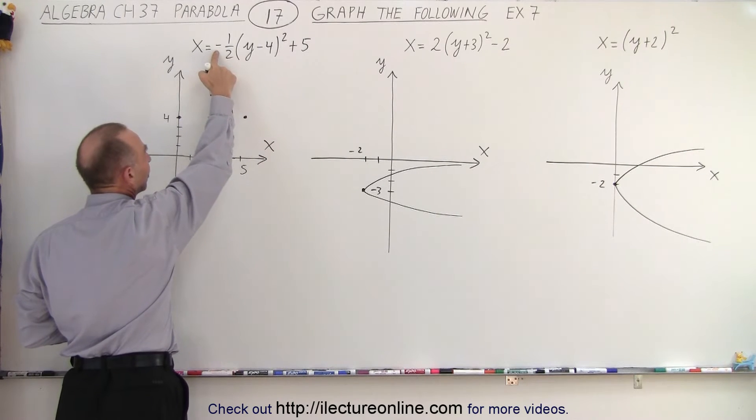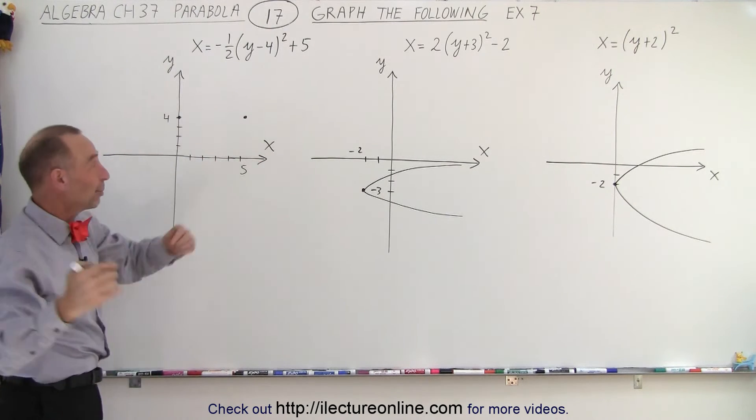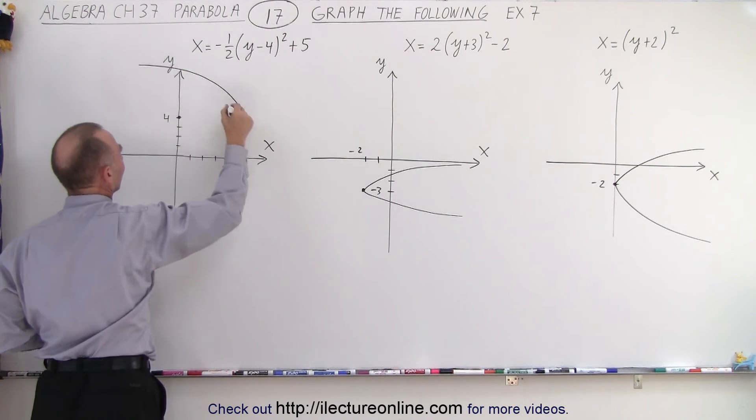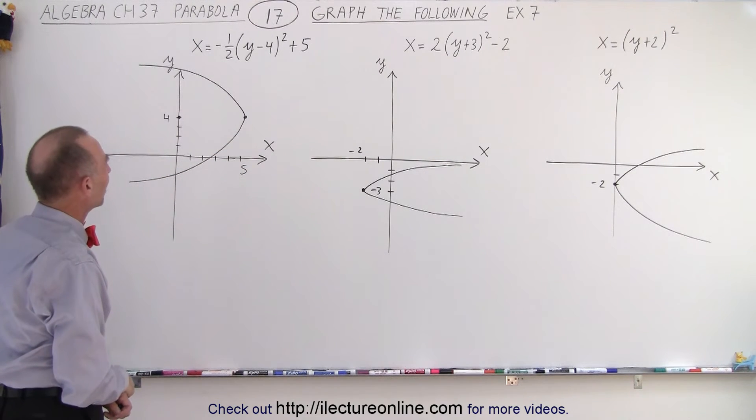It opens downward or towards the negative direction. And because of the one-half, it's a very wide parabola. So it'll kind of look like this and look like this. So that would be the correct parabola for that.